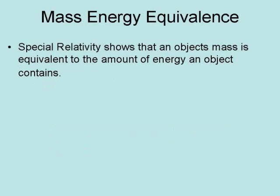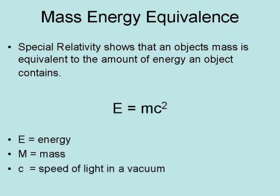Furthermore, special relativity shows that an object's mass is equivalent to the amount of energy an object contains. It is based on Einstein's famous equation E equals MC squared, where E equals energy, M equals mass, and C equals the speed of light in a vacuum.